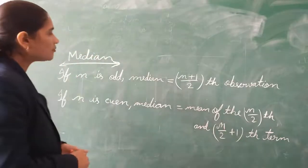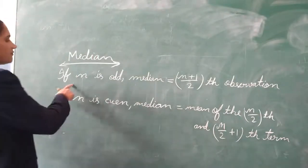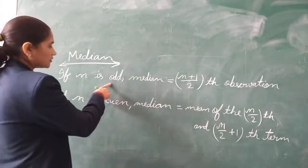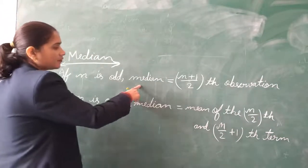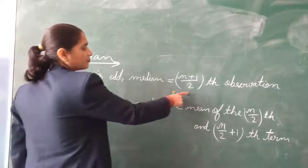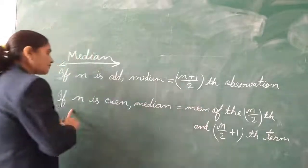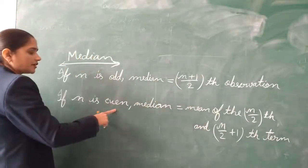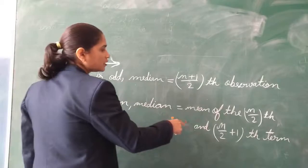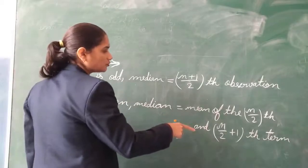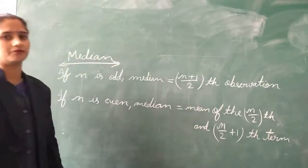Let the number of observations be n. If n is odd, then the median will be found using the (n+1)/2 formula. If n is even, then the median will be found using the mean of the n/2 and (n/2 + 1) observations.